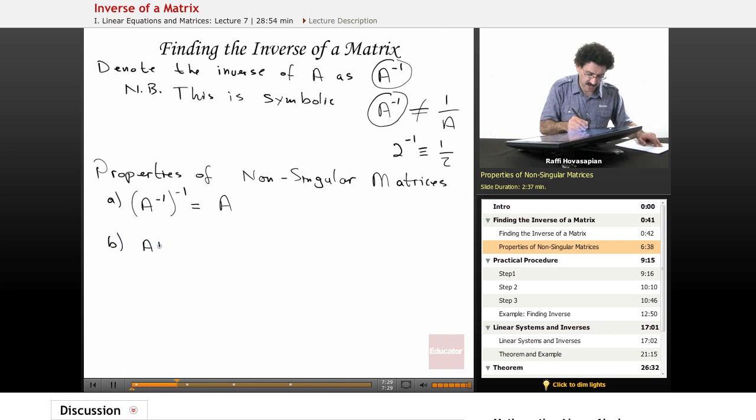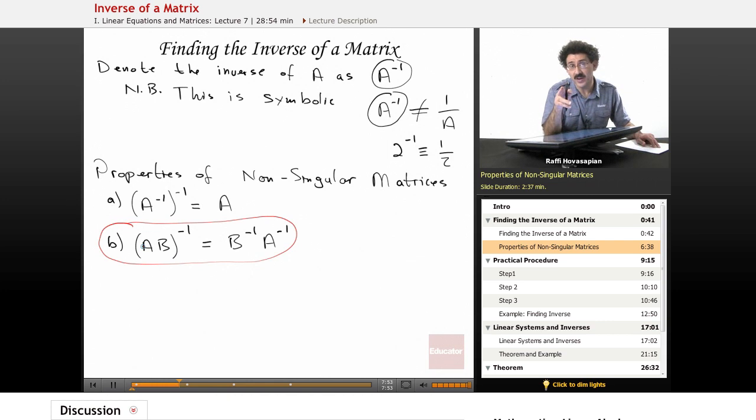Property B: if I take two matrices A and B and multiply them, then take the inverse, I can get the same thing if I take the inverse of B first, multiply by the inverse of A. Notice the order here, this is very important. Just like with a transpose, when we did A times B transpose, that's equal to B transpose times A transpose, the same thing here.